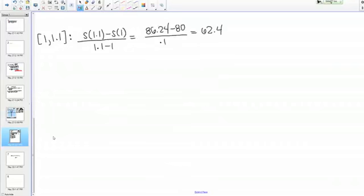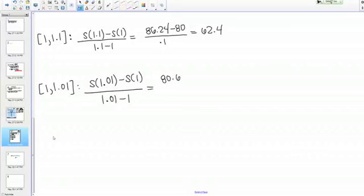Next we have [1, 1.01], so that's S(1.01) - S(1) over 1.01 - 1, which is 80.6384 - 80 over 0.01, which equals 63.84.